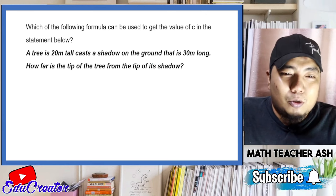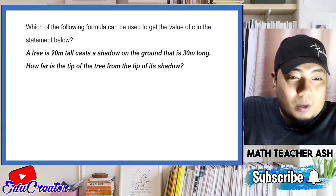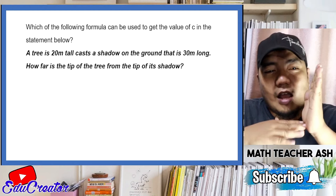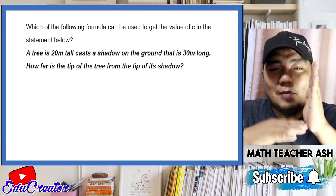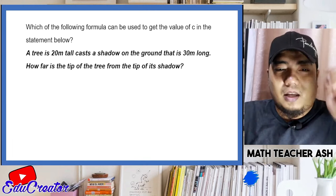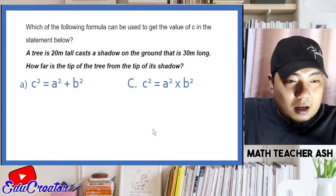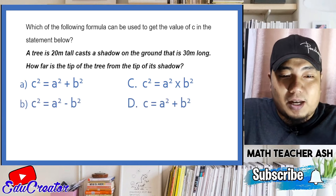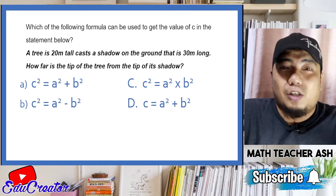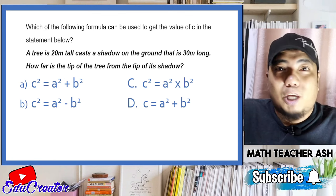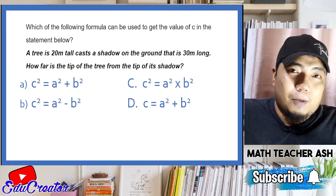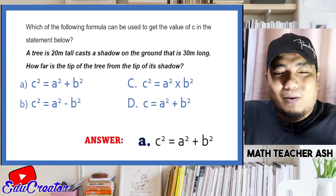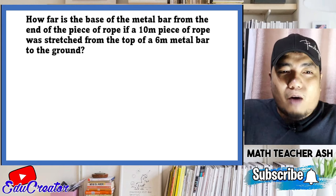Question two: a tree is 20 meters tall and casts a shadow 30 meters long. How far is the tip of the tree from the tip of the shadow? Which formula is used? Is it A c² = a² + b², B c² = a² × b², C c² = a² − b², or D c = a² + b²? This is the hypotenuse of a right triangle, so we apply the Pythagorean theorem: c² = a² + b². The answer is letter A.